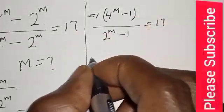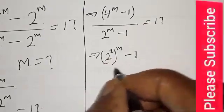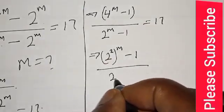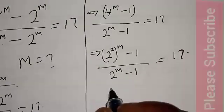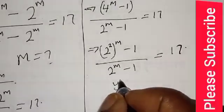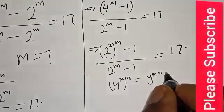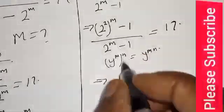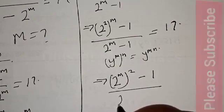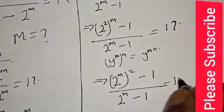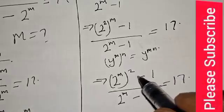But 4 raised to the power m can be expressed as 2 raised to the power 2m. Remember, if you have y raised to the power m, raised to the power n, it is the same thing as y raised to the power mn. This implies that we have 2 raised to the power 2m minus 1, over 2 raised to the power m minus 1, equal to 17. Here, 2 raised to the power 2m minus 1 is also 1 raised to the power 2, that is 1 squared — this is a difference of two squares.